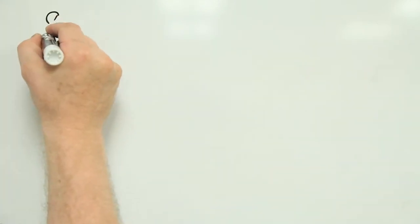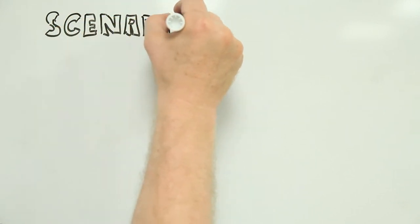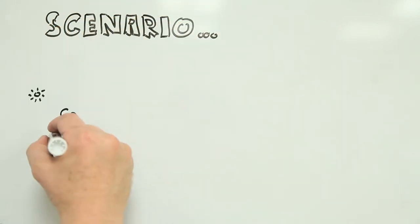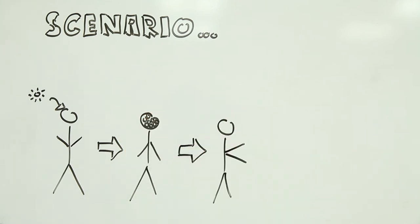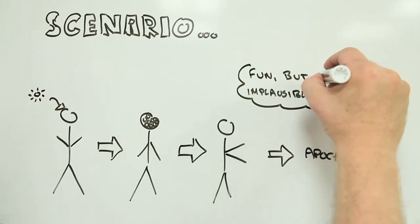One approach is to assume the worst. Maybe that novel, never before seen nanoparticle could burrow into your brain, replicate itself and bring about the next zombie apocalypse. Maybe it could, but probably it won't.